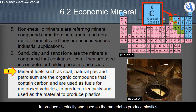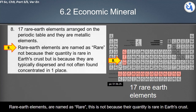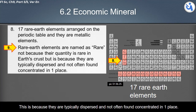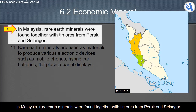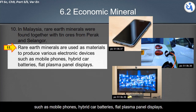Non-metallic mineral fuels are also used to produce electricity and as material to produce plastics. There are 17 rare earth elements arranged on the periodic table, and they are metallic elements. Rare earth elements are named 'rare' not because their quantity is rare in the earth's crust, but because they are typically dispersed and not often found concentrated in one place. In Malaysia, rare earth minerals were found together with tin ores from Perak and Selangor. Rare earth minerals are used as materials to produce electronic devices such as mobile phones, hybrid car batteries, and flat plasma panel displays.